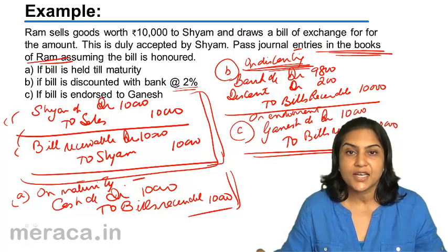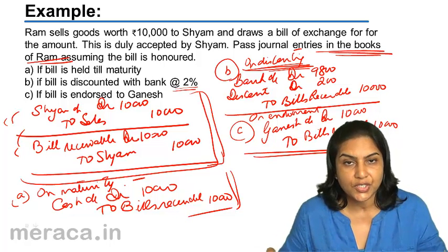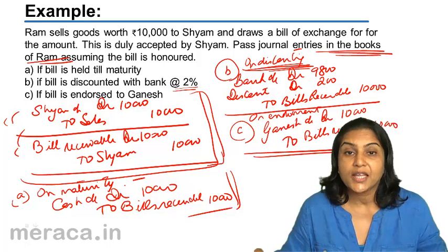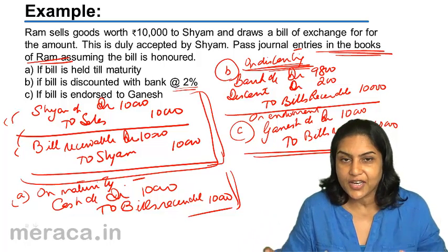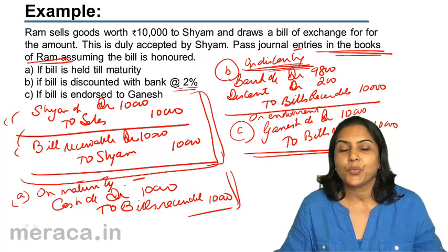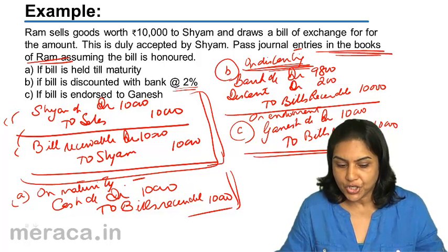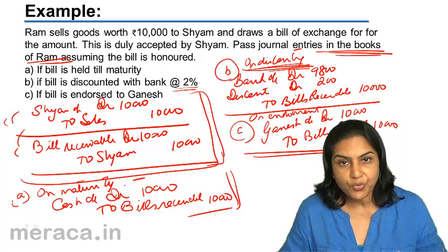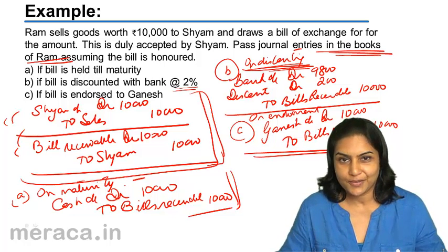I hope with these examples the basic accounting entries with respect to bills of exchange in the books of the creditor are clear — whether the bill is held for maturity, whether the bill is discounted with the bank, or the bill is endorsed.